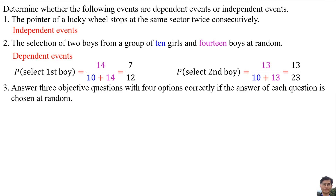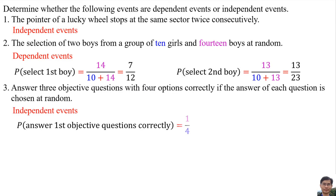Number 3. Answer 3 objective questions with 4 options correctly, where the answer of each question is chosen at random. They are independent events. The probability of answering the first objective question correctly is 1 over 4.